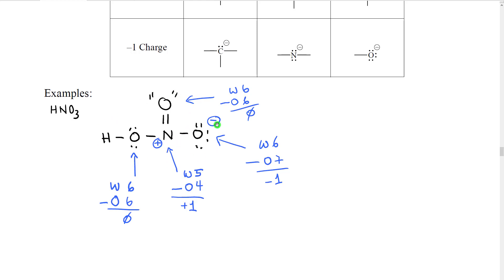If we look at the overall structure, we see that we have a positive formal charge on one atom and a negative formal charge on the other. So this structure is overall neutral — it's not an ion, even though there are charges inside the structure.